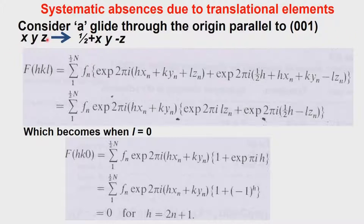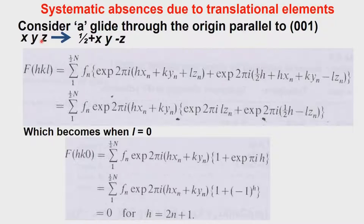The A glide operation takes the point x, y, z to half+x, y, z-bar. Operating the A glide again takes us back to the original point. For the structure factor F(h,k,l), we write the summation from 1 to n: f_n × exp(2πi(hx + ky + lz)). Due to the second equivalent position, we separate the summation into two parts — from 1 to n/2 — giving: f_n × exp(2πi(hx_n + ky_n + lz_n)) plus exp(2πi(h/2 + hx_n + ky_n − lz_n)).